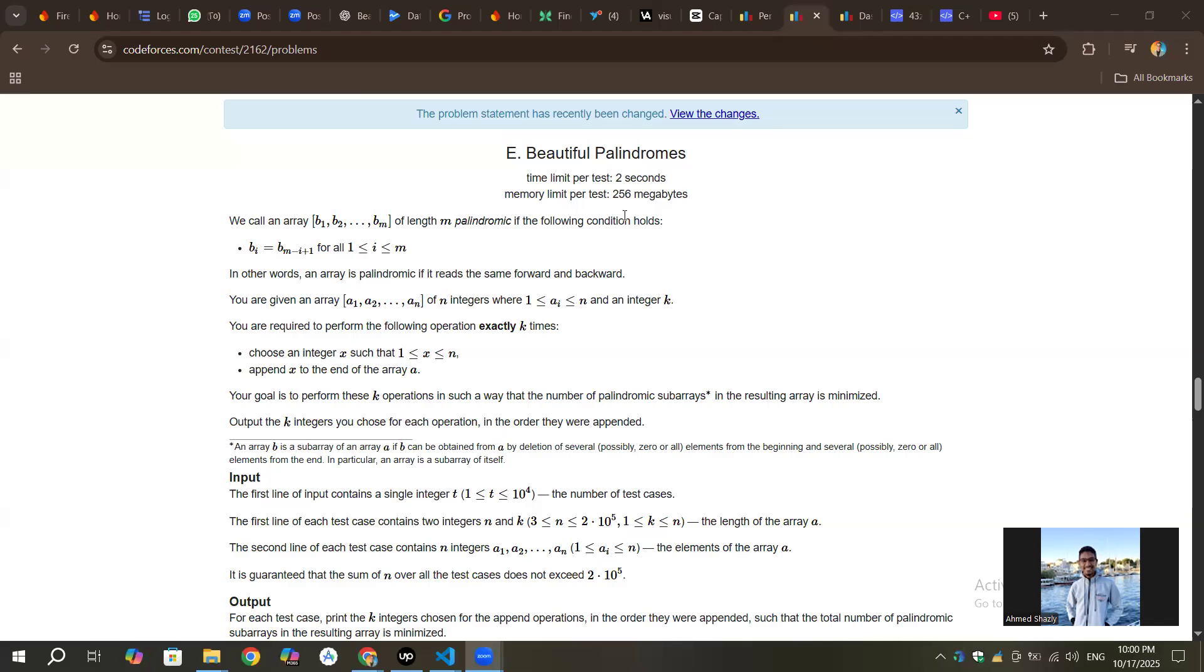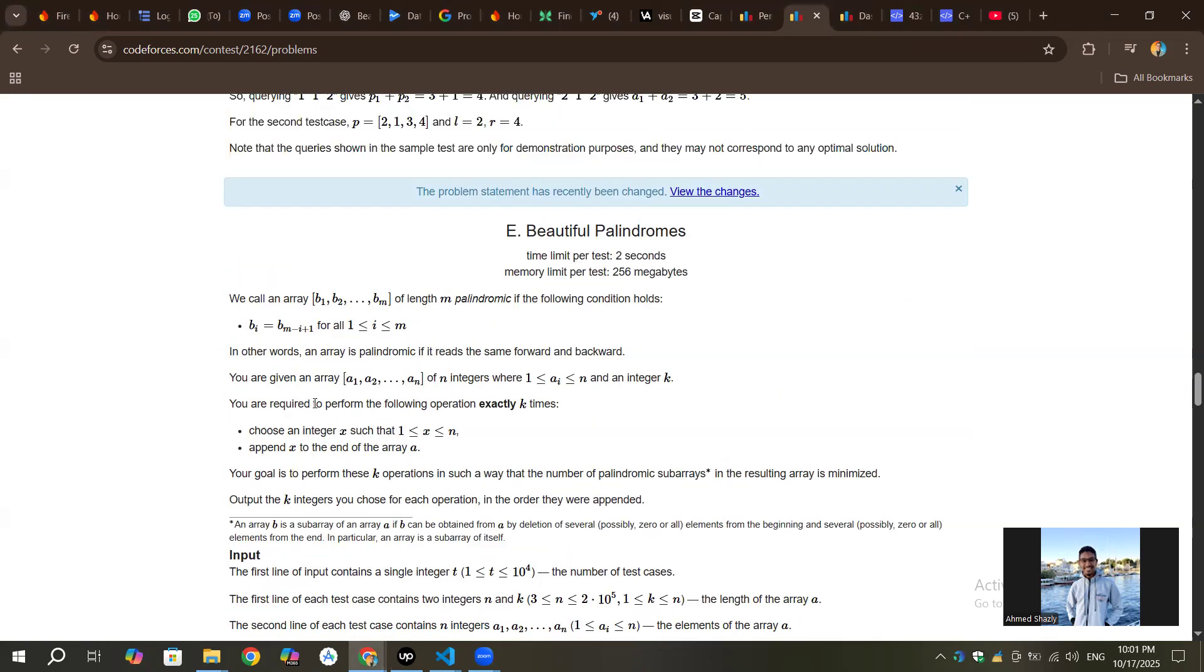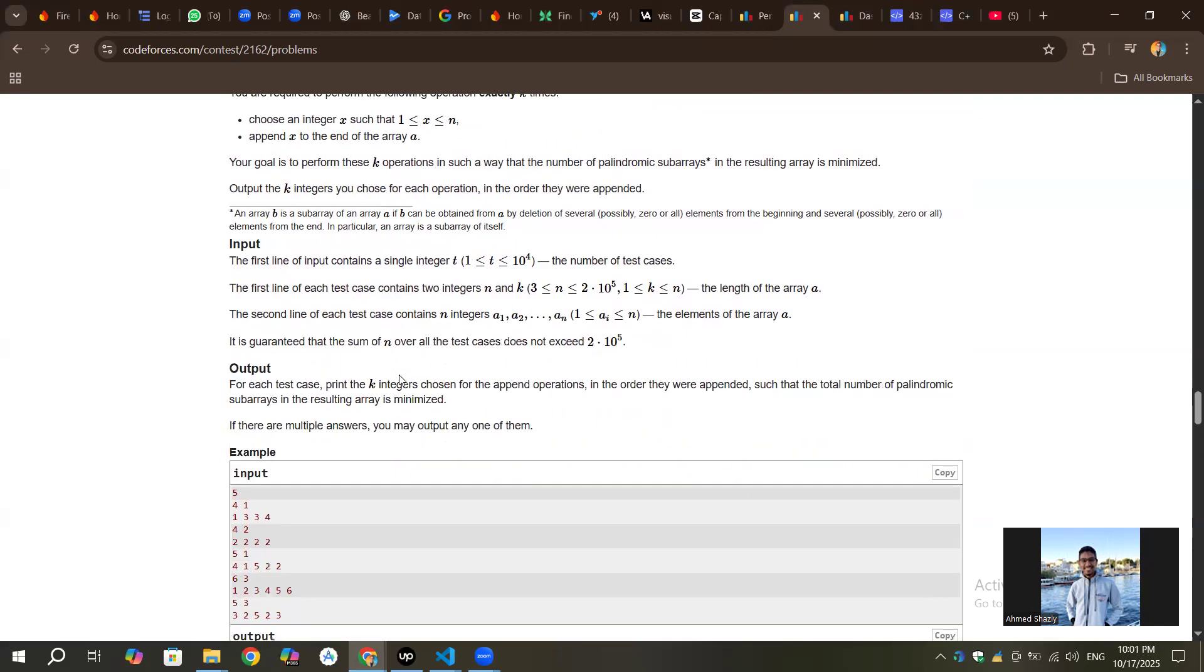Now for problem E. For this problem, we are given an array where all elements are from 1 to n, and we have to add integer x, which is from 1 to n, exactly k times. The thing here is, after our addition, we should try to minimize the number of subarrays that are valid palindromes. So that's the question.